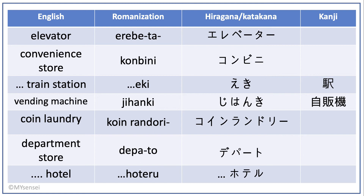Here's a list of words that may be useful when you visit Japan: Elevator; Konbini — convenience store; Eki — train station; Jihanki — vending machine; Koin laundry — coin laundry; Depato — department store; Hoteru — hotel. You can use these in conjunction with 'doko desu ka' to ask for directions.